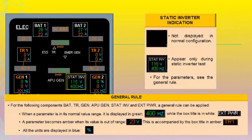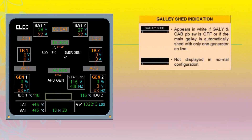Static converter indication is not displayed in normal configuration; parameters appear in green only during a static inverter test. Galley shed indication appears in white if the galley and cabin pushbutton switch is in the off position, or if the main galley is automatically shed with only one generator online. Not displayed in normal configuration.